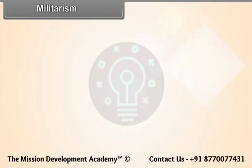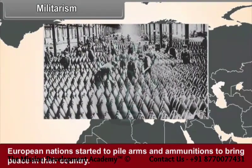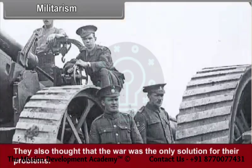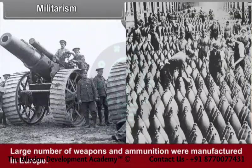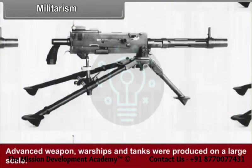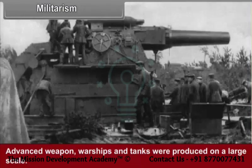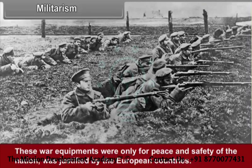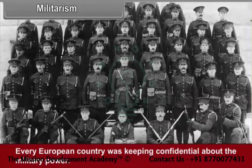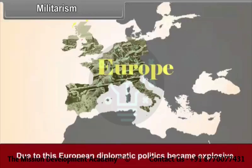Militarism: European nations started to pile up arms and ammunition, believing that war was the only solution to their problems. A large number of weapons and ammunition were manufactured in Europe. Advanced weapons, warships, and tanks were produced on a large scale. These war equipments were justified as being for the peace and safety of the nation. Every European country kept its military power confidential. Due to this, European diplomatic politics became explosive.